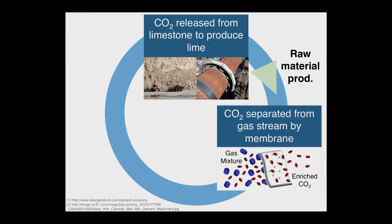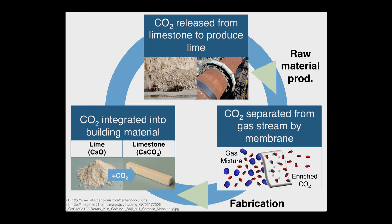But instead of emitting the CO2, we instead capture it and separate it from the gas stream using a selective membrane, and then reuse it as a feed material in the next step. In order to fabricate our building elements, we mix lime into beams and columns using 3D printing, and then expose it to CO2 under high pressure to form a final product composed of limestone.